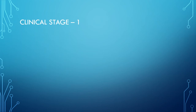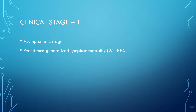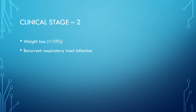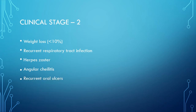WHO Clinical Stage 1: patient is mostly asymptomatic, but 25 to 30 percent of infected people may develop persistent generalized lymphadenopathy — enlarged lymph nodes of more than 1 cm in two or more non-contiguous sites persisting for three months. Clinical Stage 2: unexplained moderate weight loss, recurrent respiratory tract infections like tonsillitis, otitis media, pharyngitis, herpes zoster, angular cheilitis, recurrent oral ulcers, papular pruritic eruption, and fungal nail and other fungal infections.